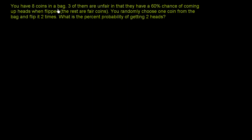You have eight coins in a bag. Three of them are unfair in that they have a 60% chance of coming up heads when flipped. The rest are fair coins. So if three are unfair, the rest are five coins. And when this problem says that they are fair coins, it means that they have a 50-50 chance of coming up either heads or tails. You randomly choose one coin from the bag and flip it two times. What is the percent probability of getting two heads?